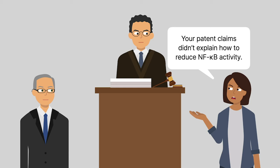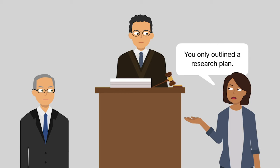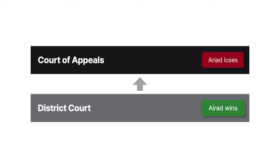Lilly contended that Ariad's three hypothesized molecules amounted to nothing more than a research plan. The Court of Appeals for the Federal Circuit reversed, holding that Ariad's claims were invalid for lack of an adequate written description. The Federal Circuit then granted Ariad's petition for rehearing en banc.